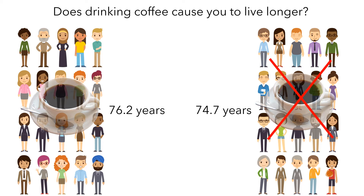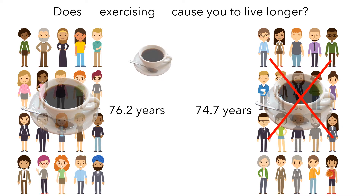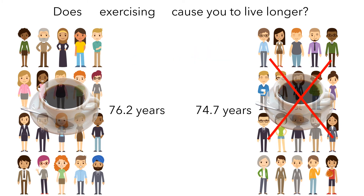Can we conclude it really was the coffee that was the cause? Could it be that being female was the cause? Well, since people were randomly assigned to the two groups, each group should have the same number of females. Could it be that exercising regularly was the cause? Again, since people were randomly assigned, each group should have the same number of exercisers. Although it's possible that drinking coffee makes people exercise more, which then increases lifespan — but that's an issue for another video. So with this research design, we can probably conclude that it was drinking the coffee that caused the difference in lifespan.